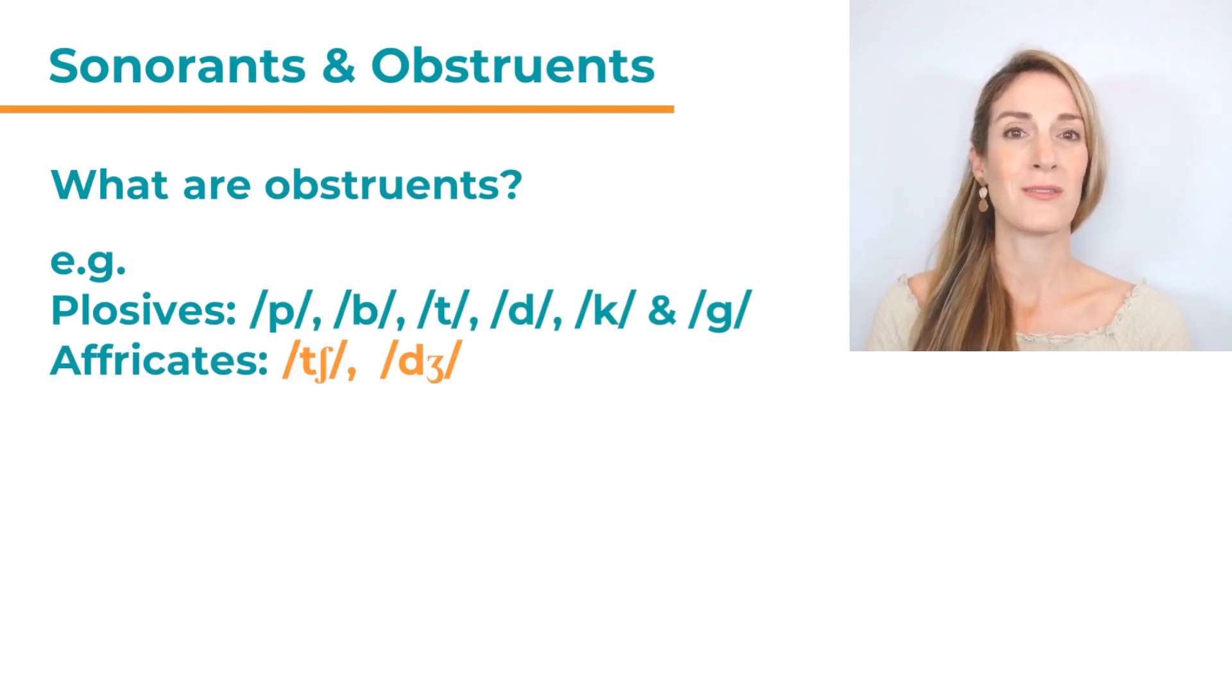Another group that belongs to the obstruents are the affricates. We've got two, ch and j.